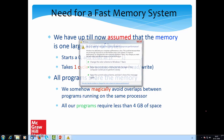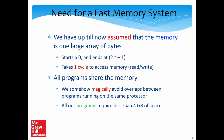Up till now, we have assumed that the memory is one large array of bytes. This large array starts at 0 and ends at 2 to the power 32 minus 1, if we assume a 32-bit memory system. So every program perceives the memory as one huge array of bytes, where each byte has an address — the memory address. We have also assumed that it takes one cycle to access memory, to perform a read or write.